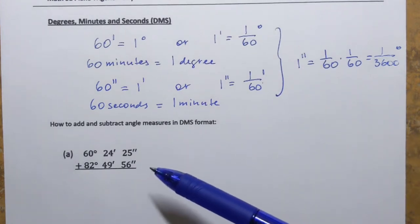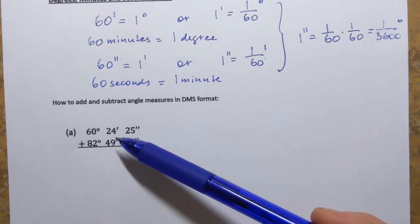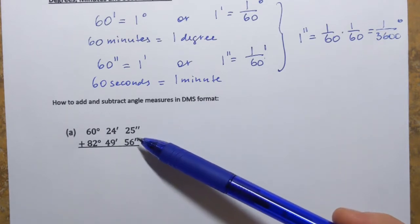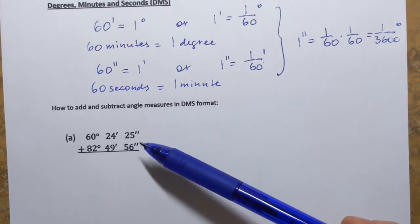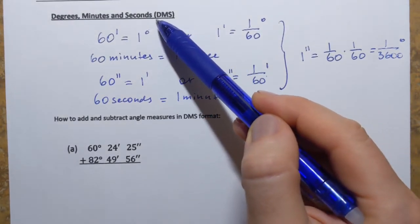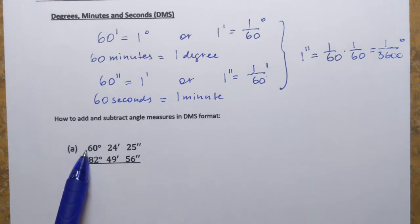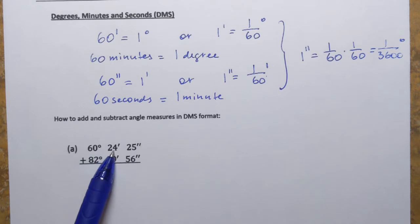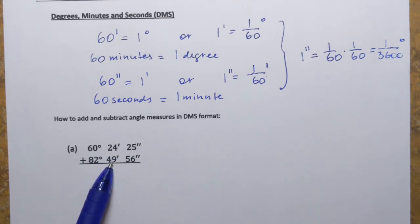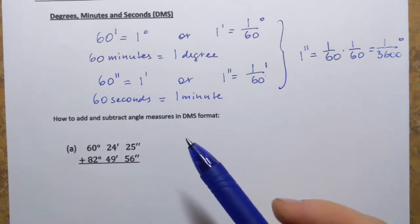Now let's do some examples. We have two angle measures expressed in degrees, minutes, and seconds — sometimes called DMS format for short. We have the sum of two angle measures: one angle measures 60 degrees, 24 minutes, 25 seconds, and the second angle measures 82 degrees, 49 minutes, 56 seconds.